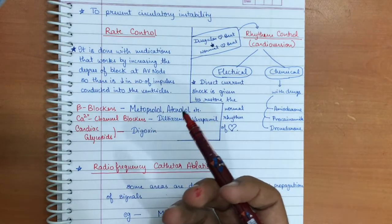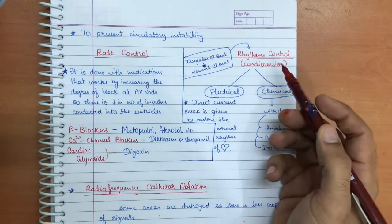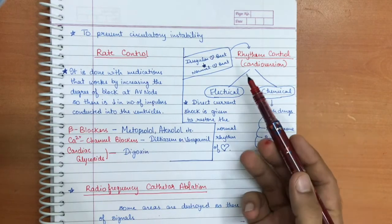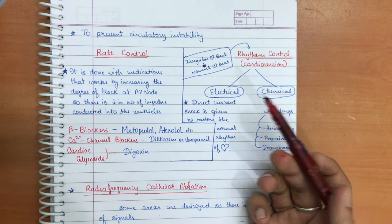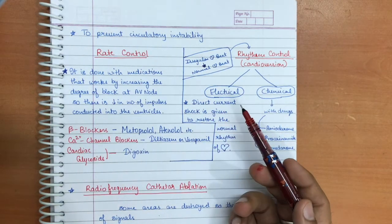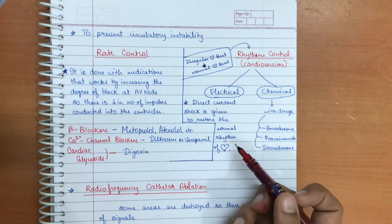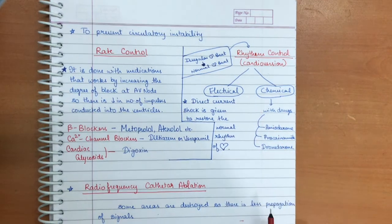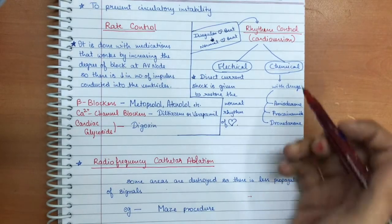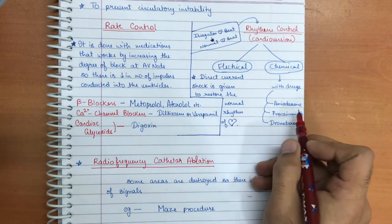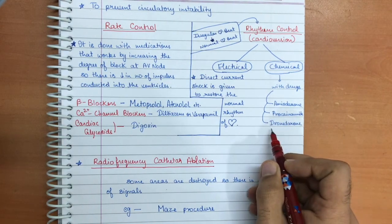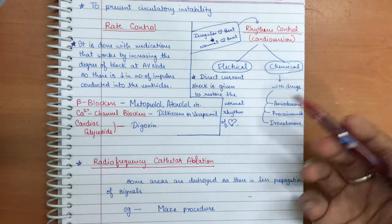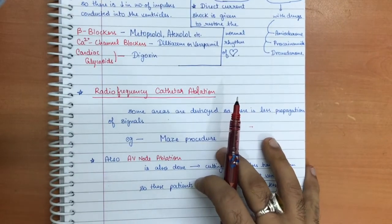The second method is rhythm control, also called cardioversion, where the irregular heartbeat is converted to a normal heartbeat. This can be done electrically, by delivering a direct current (DC) shock to restore normal heart rhythm, or chemically using drugs such as amiodarone, procainamide, and dronedarone to achieve cardioversion.